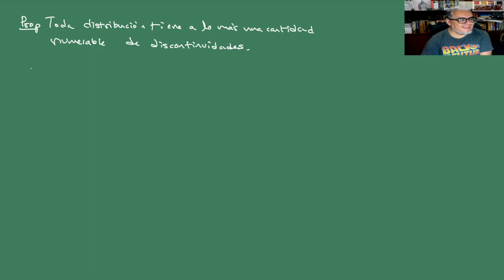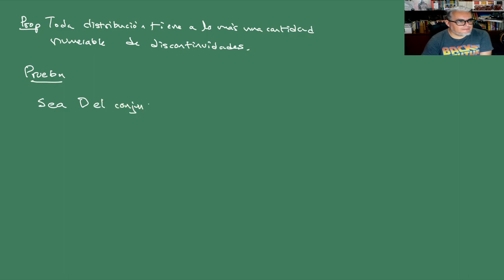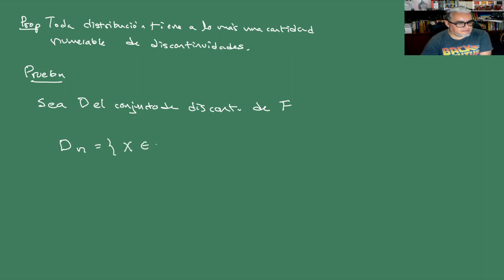La prueba es sorprendentemente rápida. Tomamos el conjunto D de discontinuidades de nuestra distribución F, y tomamos el conjunto D_N de x en D tales que 1/(N+1) es menor que F(x) menos el límite por la izquierda de F(x), menor o igual que 1/N.